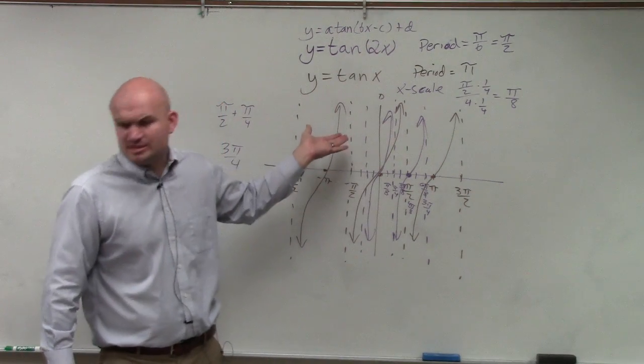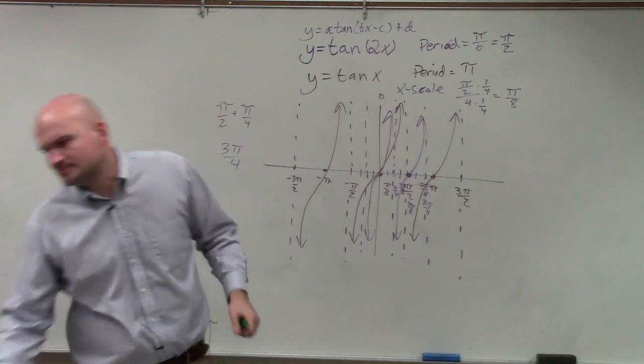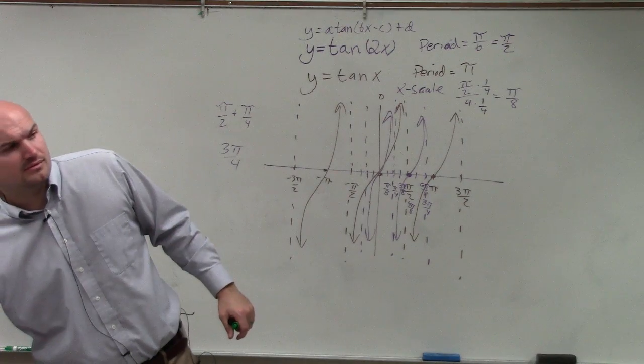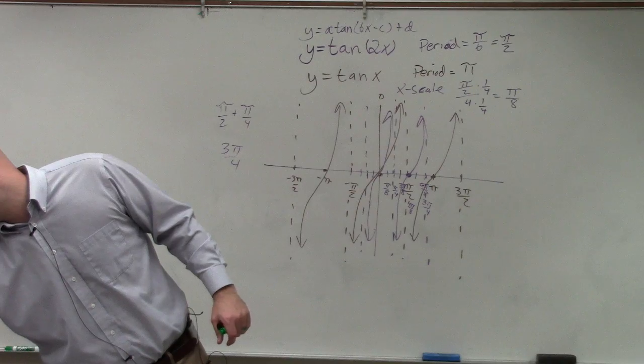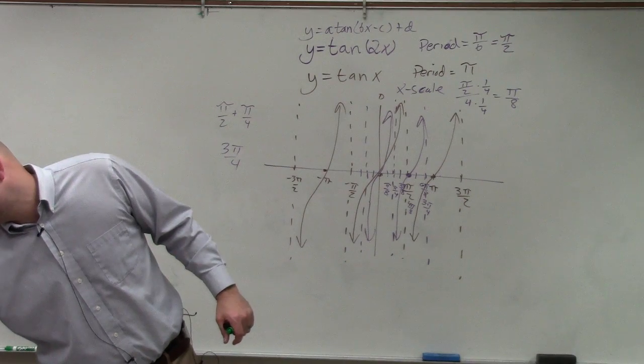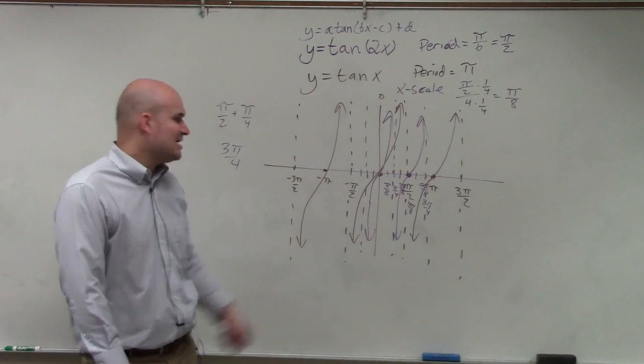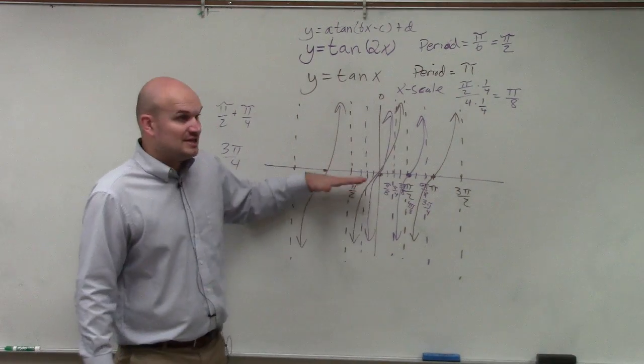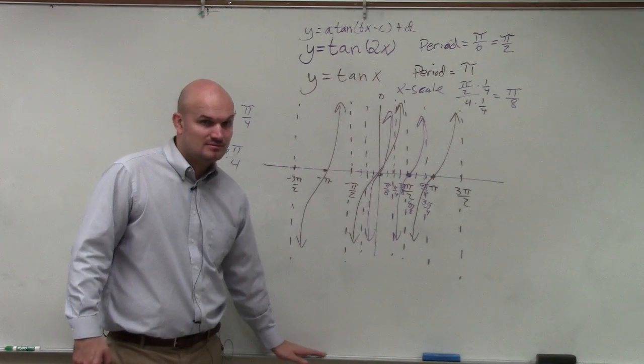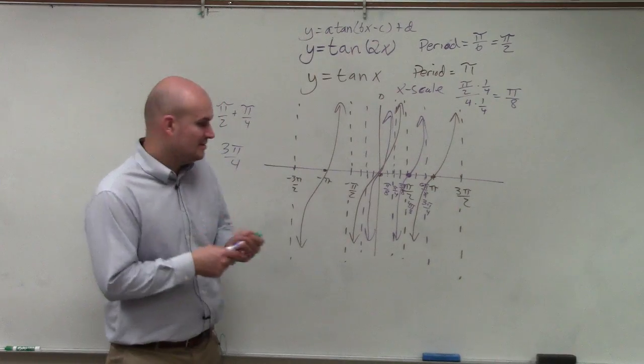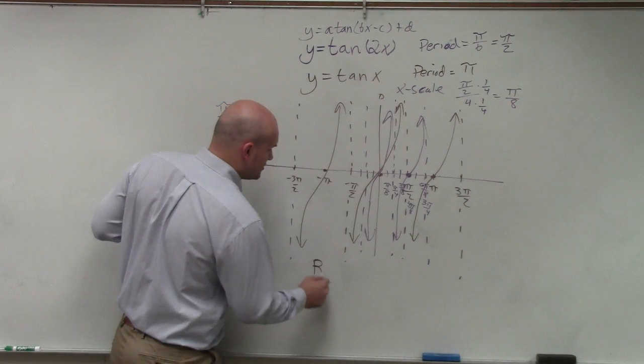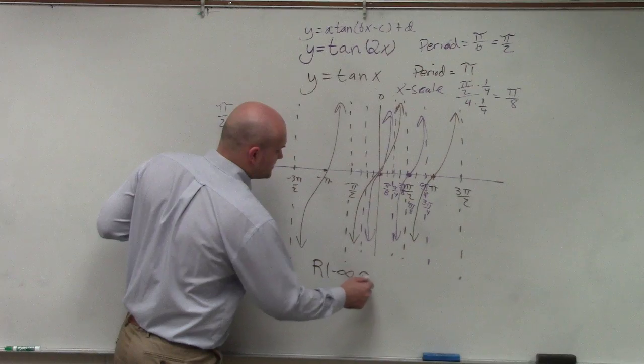Again, let's just talk about—this one didn't ask for the domain range, did it? You just said graph it? All right, well, let's just practice domain range anyways. The range: how far low does this graph go? Negative infinity. How high is it going to go? Infinity. So the range is from negative infinity to infinity.